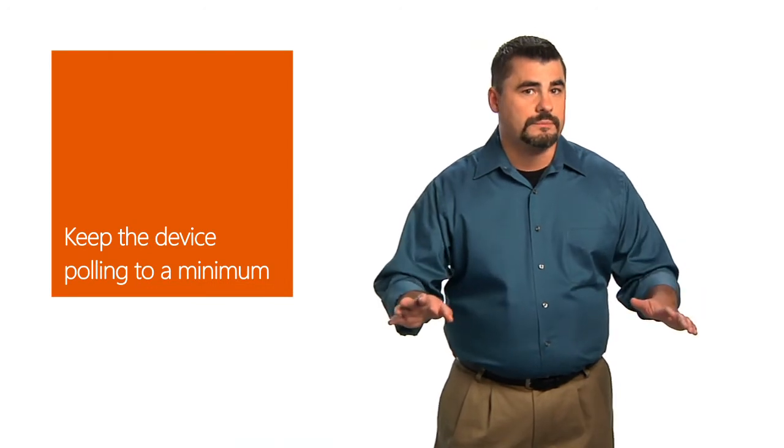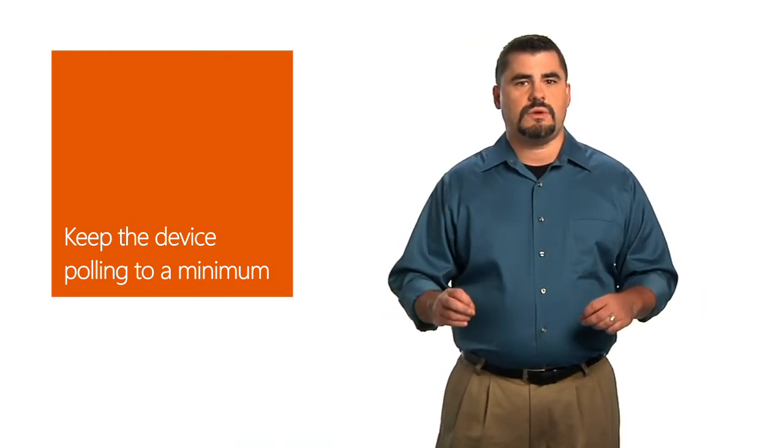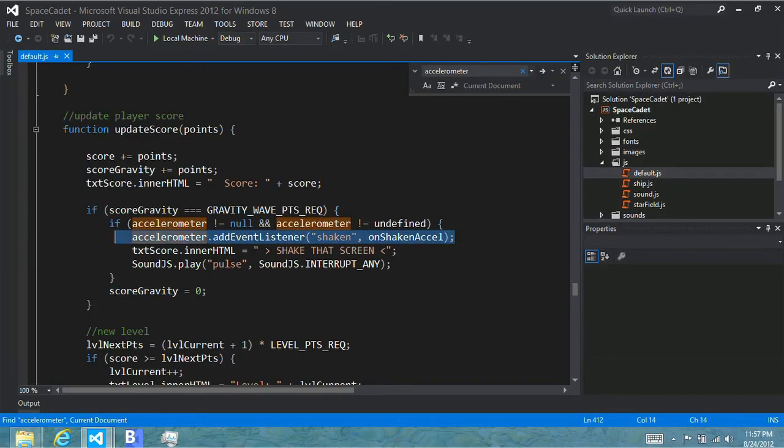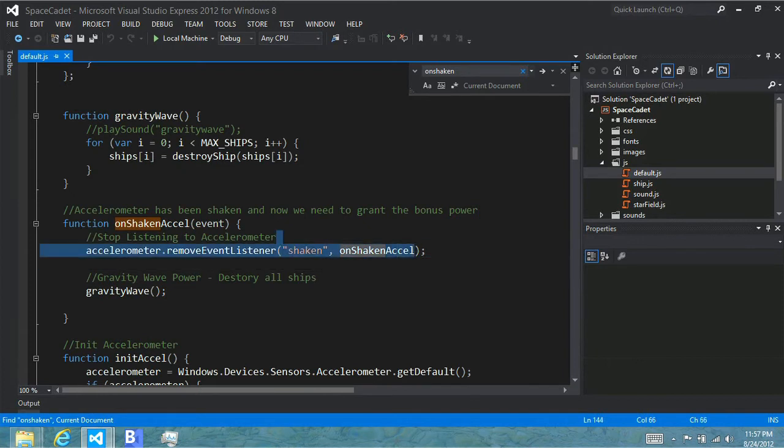What's important when using sensors like the accelerometer, though, is keep the device polling to a minimum. You'll only want to enable the sensor when you need it, and then immediately shut it off when you get the result. In your game, this might mean only turning on the accelerometer when you know the player is about to shake the device. For example, maybe a certain power-up, and then turning it off afterwards. This is done simply by adding an event handler for the device and then removing the event handler. Windows will take care of only polling the device when an event handler is present.